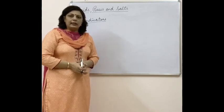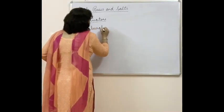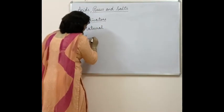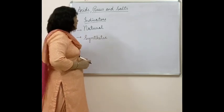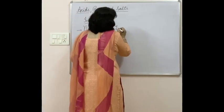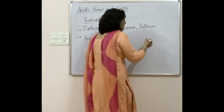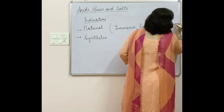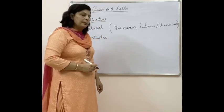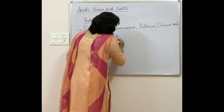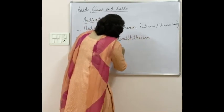We have a number of indicators around us. We can categorize them into two categories: natural indicators and synthetic indicators. Synthetic means indicators which are not present in nature but are prepared by human beings. The natural indicators are turmeric, litmus - obtained from lichens - and china rose. For synthetic indicators, we have phenolphthalein.